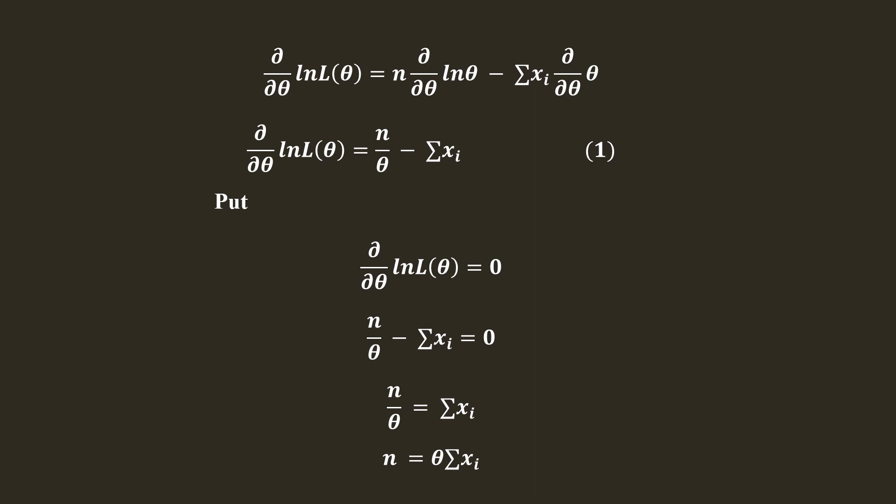Now we have to check whether the log likelihood function is maximum or not. We will differentiate equation 1 with respect to θ. In equation 1, we have n/θ. When we take derivative of 1/θ, it is -1/θ², so the result is -n/θ², which is less than 0.